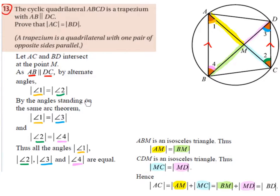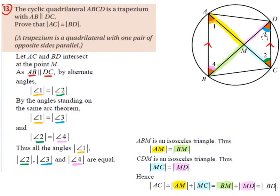By the angles standing on the same arc theorem, angle 1 is equal to angle 3. Angle 1 (in orange) equals angle 3 (in blue). Arc BC is our arc. The line BA and AC come together at point A forming angle 1, and the line BD and DC come together at point D forming angle 3. Since they are both standing on the same arc, these two angles must be equal.